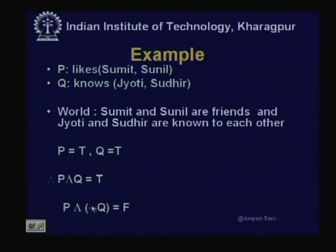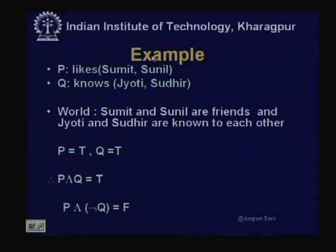But what happens with p AND NOT q? Here q was true, so NOT q means 'does not know(Jyoti, Sudhir).' But Jyoti and Sudhir do know each other, so 'knows(Jyoti, Sudhir)' is true, meaning NOT q is false in this world. The world plays a very important role because the truth value of a proposition varies depending on the world in which you interpret it. Since NOT q is false and p is true, p AND NOT q is false.